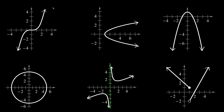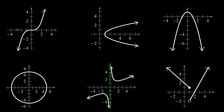For this first example, you can see that we can draw a vertical line anywhere through the graph and it's only going to intersect it at a single point. I can move it over here — still just a single point. Doesn't matter where I draw it, it's always just a single point. So this first graph definitely is a function.